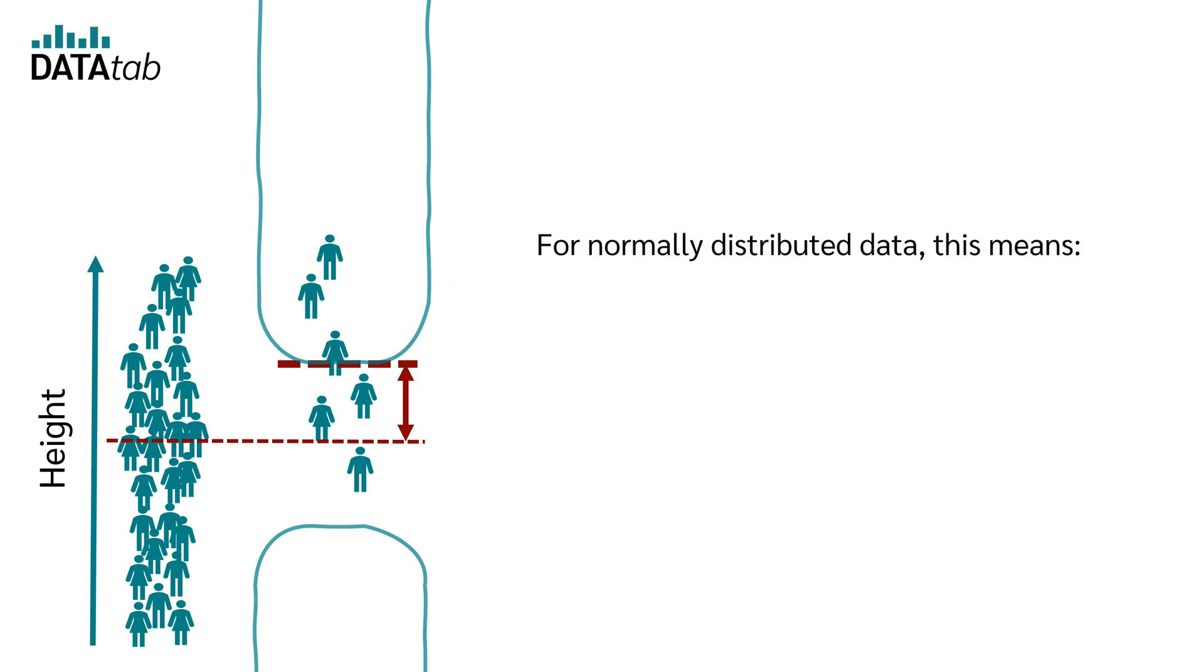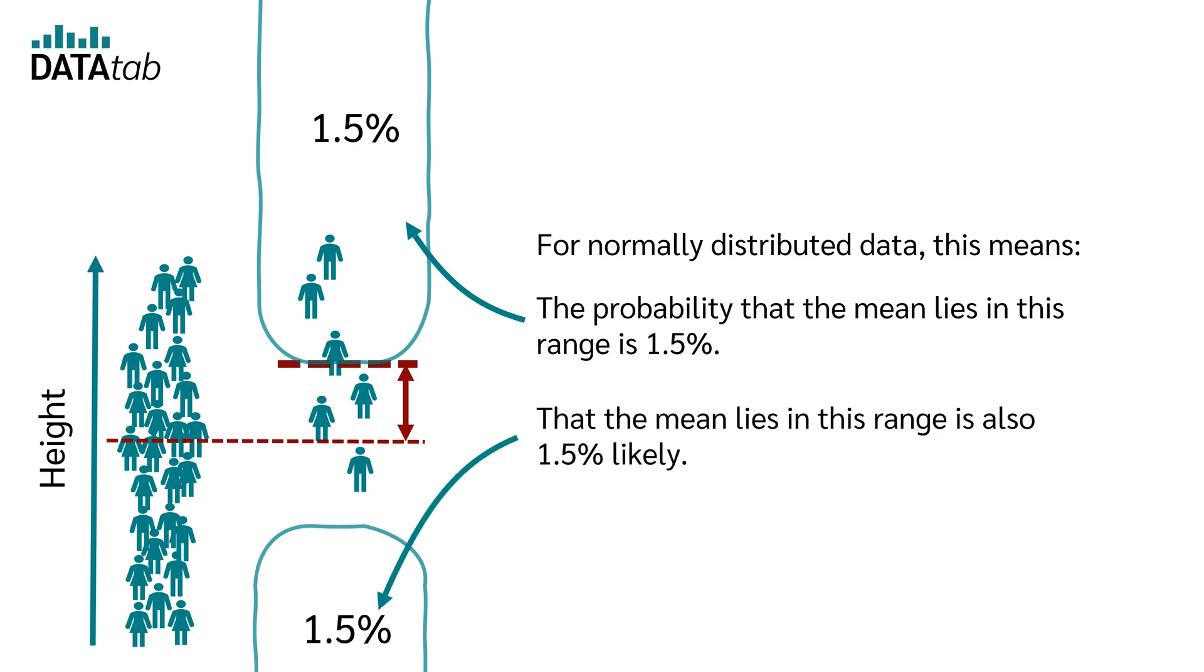For normally distributed data, this means the probability that the mean lies in this range is 1.5 percent. That the mean lies in this range is also 1.5 percent likely, and together 3 percent.